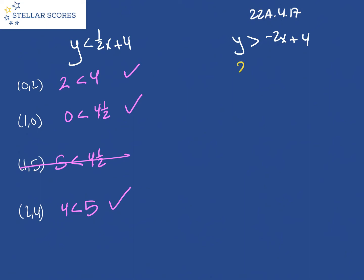So two is greater than negative two times zero is...four. Two is greater than four. Nope, that doesn't work. So that means this one's out.